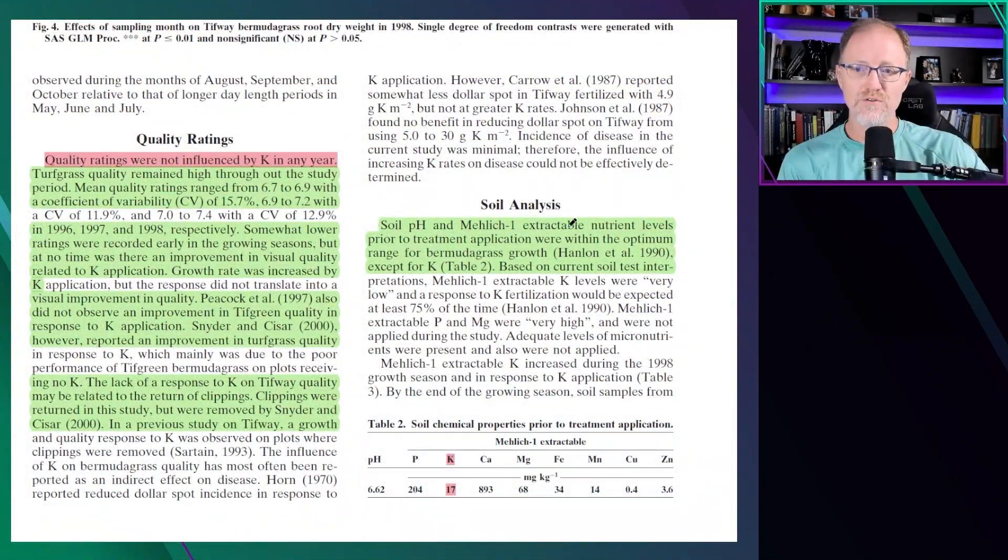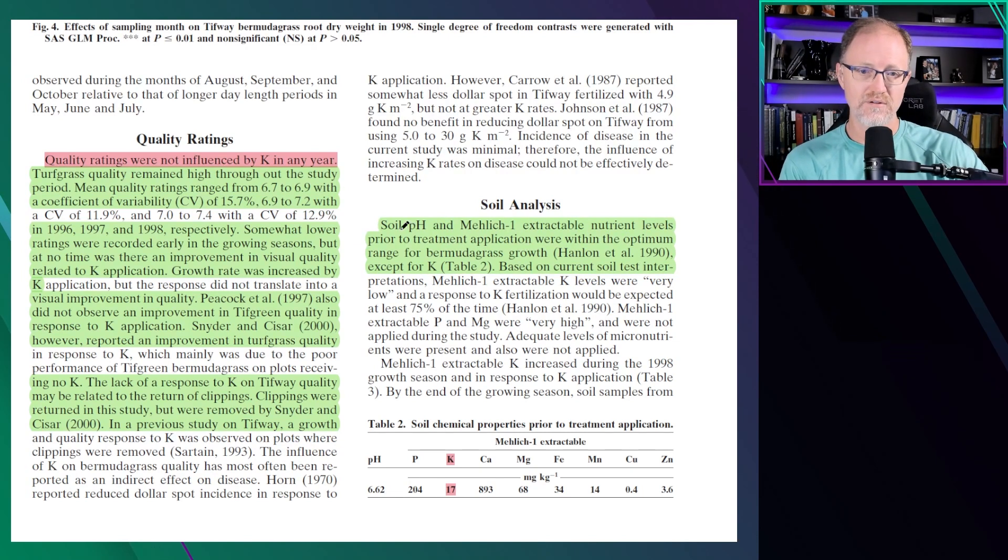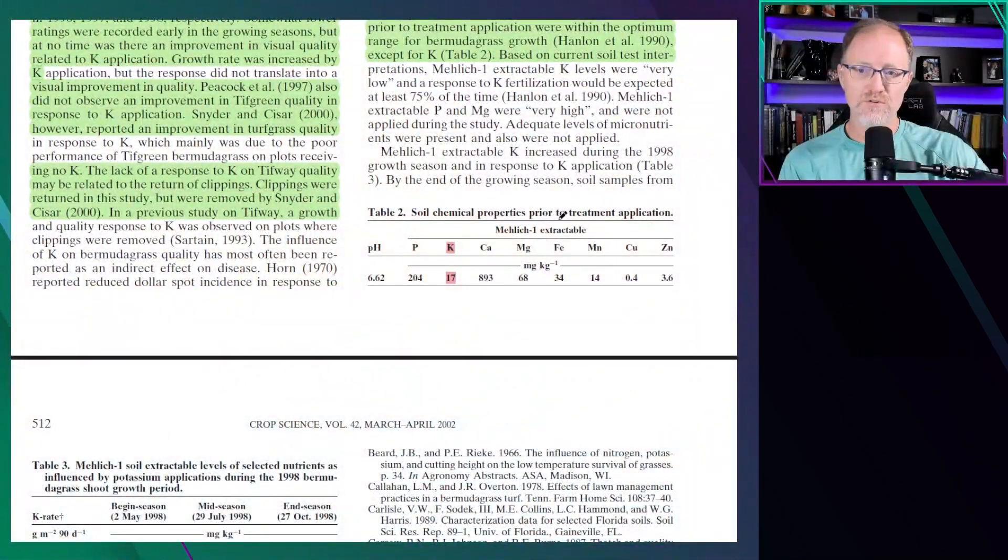The soil analysis. Soil pH and Mehlich extractable nutrient levels prior to treatment applications were within optimum ranges for turf grass growth except for potassium. So there was a good location in terms of attempting to see differences or attempting to tease out the effect of potassium or the critical level of potassium in the soil. And we did see differences in the growth rate but not the quality. Soil chemical properties prior to treatment: potassium was at 17 parts per million, which is very low.